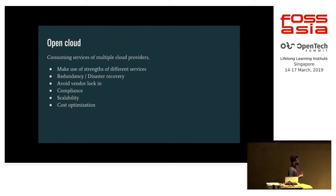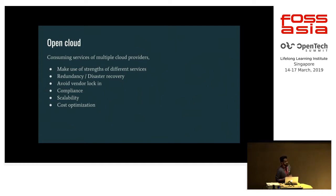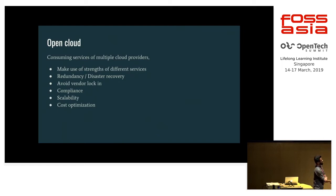You need to be flexible to shift from one provider to another. Compliance is also important — various services from different cloud providers might not be compliant with your organization's standards. Scalability matters too, since different providers offer different levels of scalability. And cost optimization is a very big concern for organizations — cost is a very important thing that we need to think about.